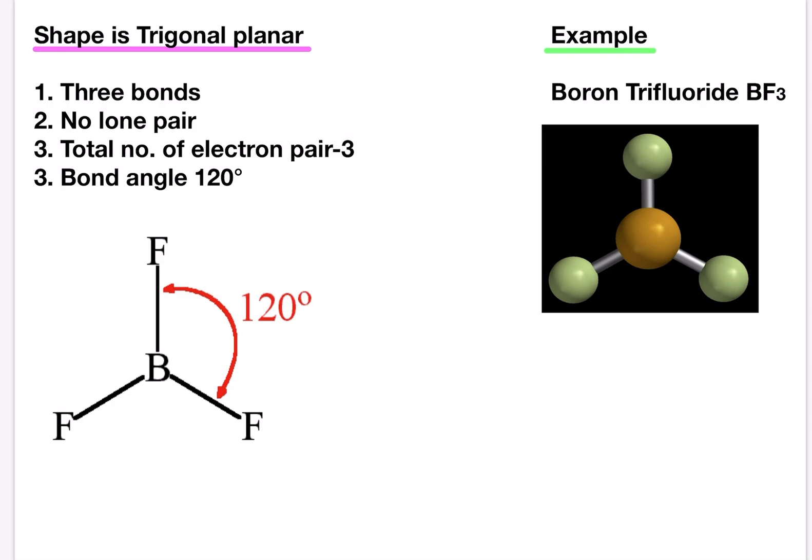Trigonal means having three angles. So it has three angles and the total number of electron pairs in this is three.